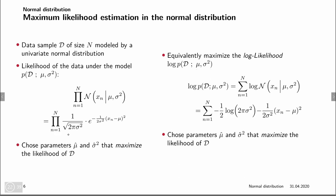Taking the log of the likelihood, we get a sum instead of a product. The one over square root of two pi sigma squared becomes minus one half times log of two pi sigma squared. The log of the exponential gets rid of the e, so instead of e to the power we get just the exponent: minus one divided by two sigma squared times x_n minus mu, squared. This is now the function we maximize to obtain mu and sigma squared.